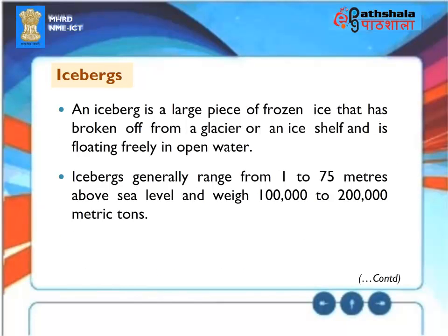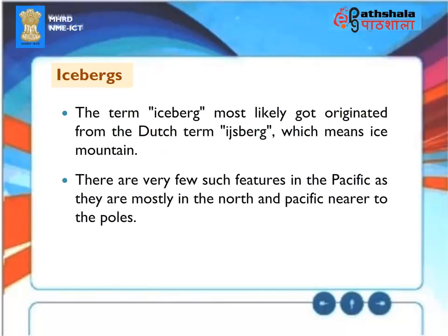Icebergs: An iceberg is a large piece of frozen ice that has broken off from a glacier or an ice shelf and is floating freely in open water. Icebergs generally range from 1 to 75 meters above sea level and weigh 100,000 to 200,000 metric tons. The term iceberg most likely originated from the Dutch term Ijsberg, meaning ice mountain. There are very few such features in the Pacific, as they are mostly found in polar regions nearer to the poles.